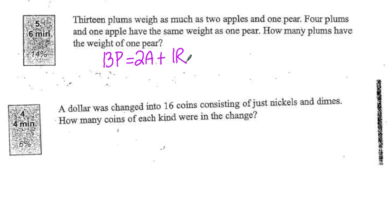I also know that four plums and one apple have the same weight as one pear, so 1r is equal to four plums, or 4p, plus one apple, or 1a.